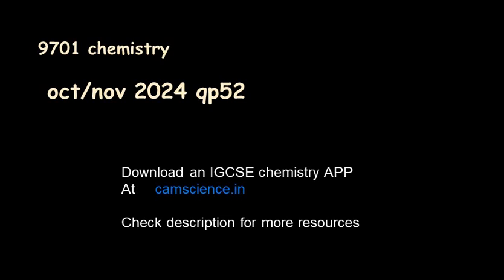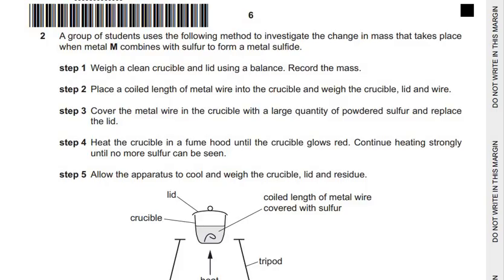We have already discussed question 1 of question paper 5.2 of the 9701 chemistry examination series October/November 2024. Let's go ahead and discuss question 2. A group of students uses the following method to investigate the change in mass that takes place when metal M combines with sulfur to form a metal sulfide.